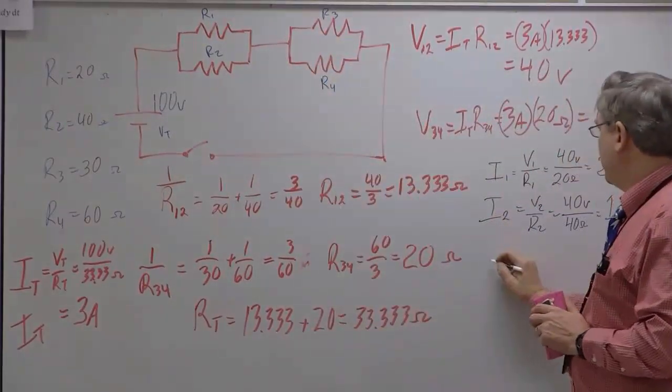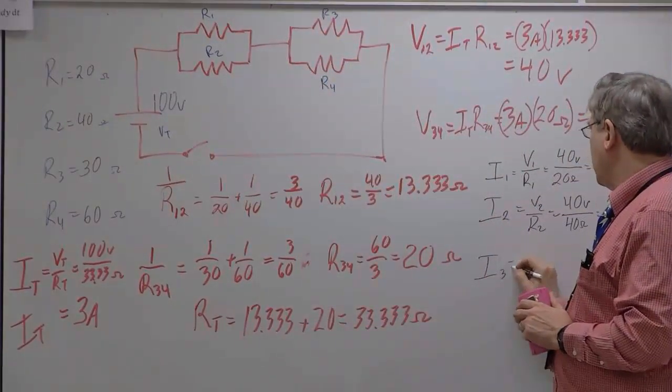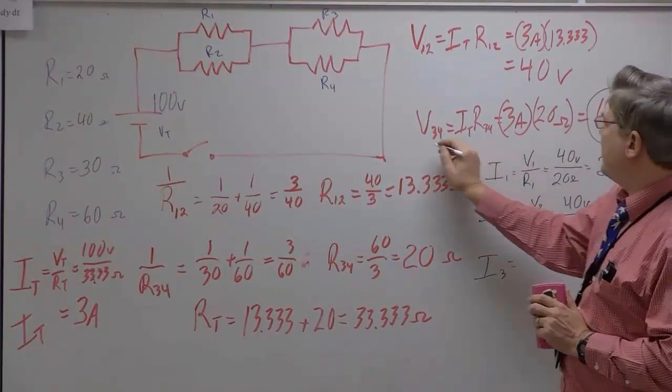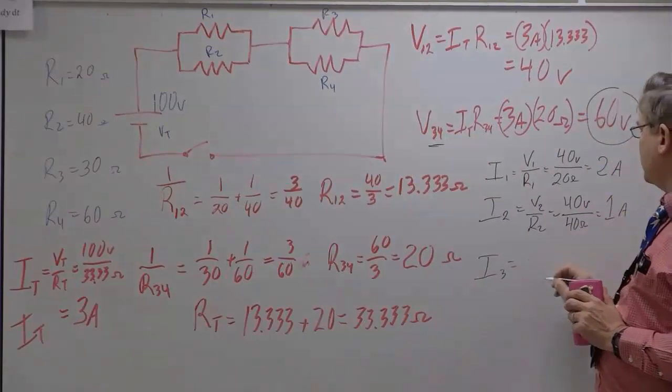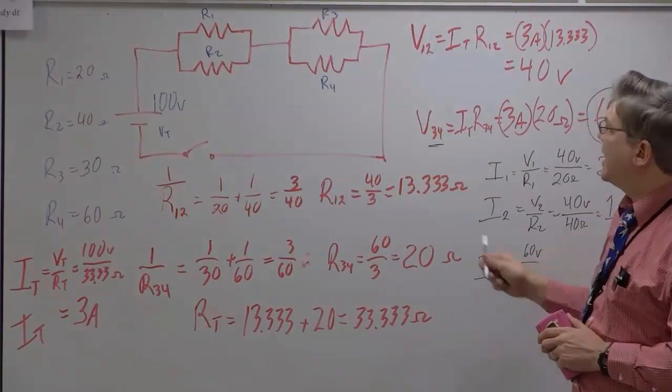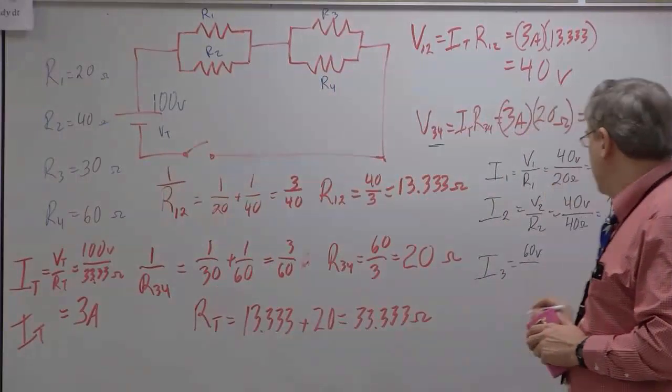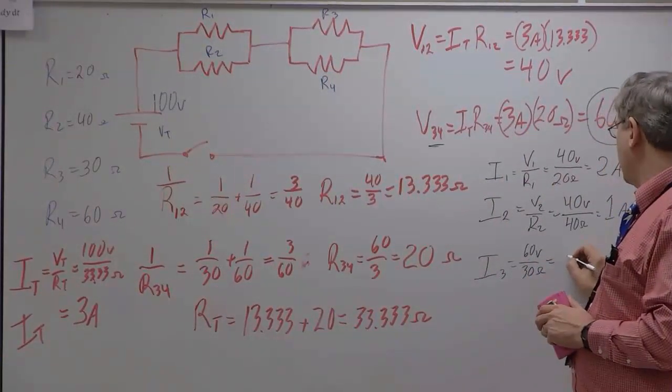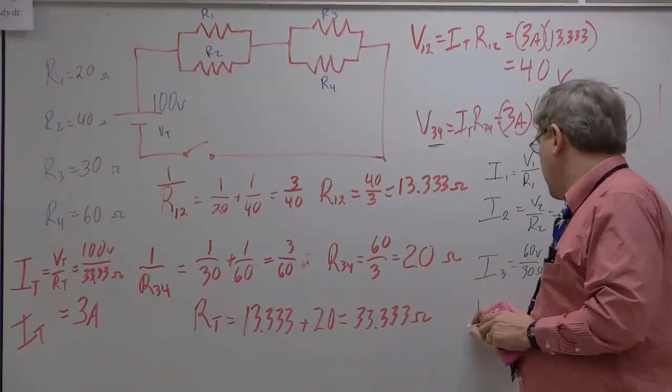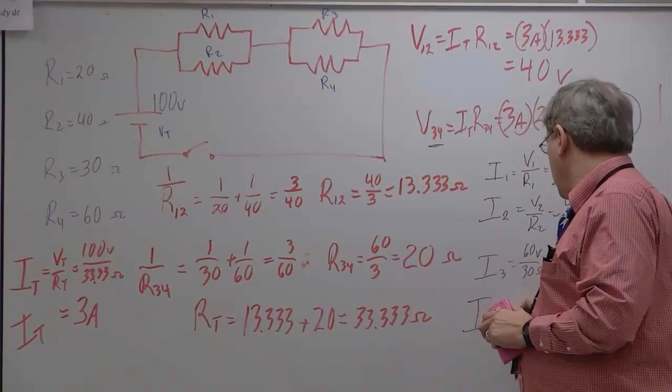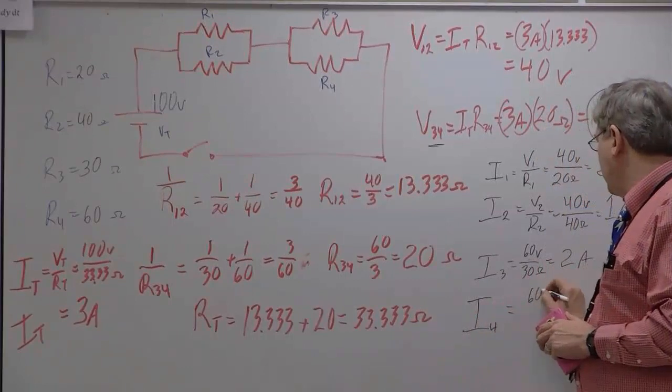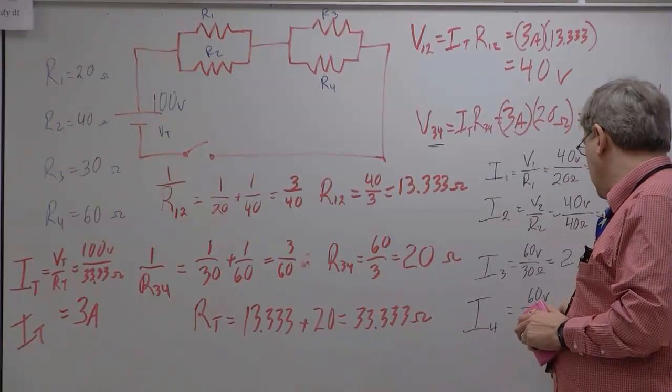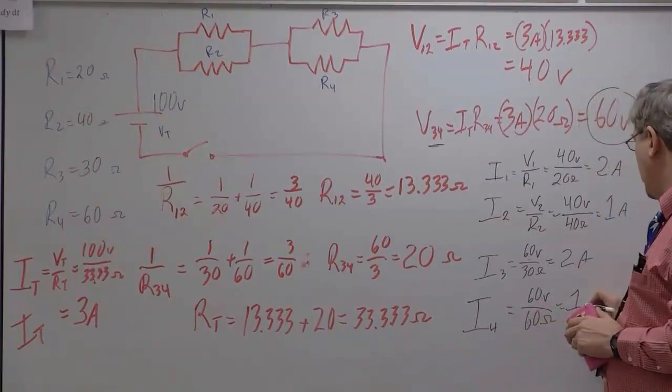Now, we'll do 3 and 4. So, I3 would be equal to V3,4 at 60 volts. 60 volts divided by R3 is 30 ohms. So, that's going to be equal to 2 amps. And I4 is equal to 60 volts divided by 60 ohms. That's going to be equal to 1 amp.